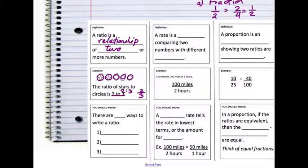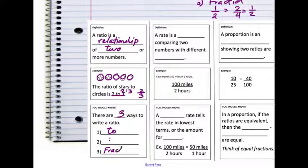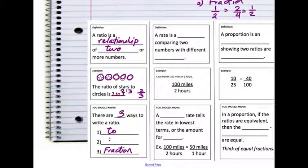Again, there are three ways to write a ratio: with the word 'to', with a colon, and as a fraction. It's really important to know that there are multiple ways to write a ratio, especially when you're looking at fractions. You want to be strong with understanding how fractions work so that we can do lots of equations with ratios.